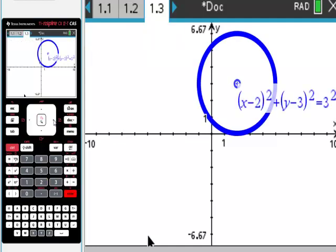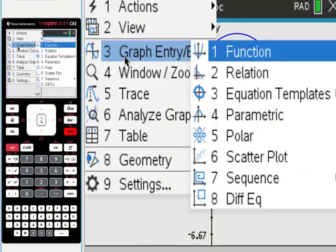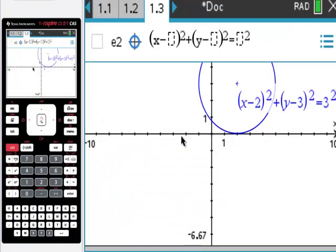There is our first circle. Going to do the same thing again. Just going to go back here, going to go to graph entry, going to choose equations, going to go to circle, the first one is the one I want.